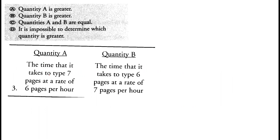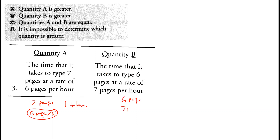The time it takes to type 7 pages at a rate of 6 pages per hour — it will take more than 1 hour. The time to type 6 pages at a rate of 7 pages per hour is less than 1 hour. Therefore quantity A is greater than quantity B because you require more than 1 hour to write 7 pages at 6 pages per hour.